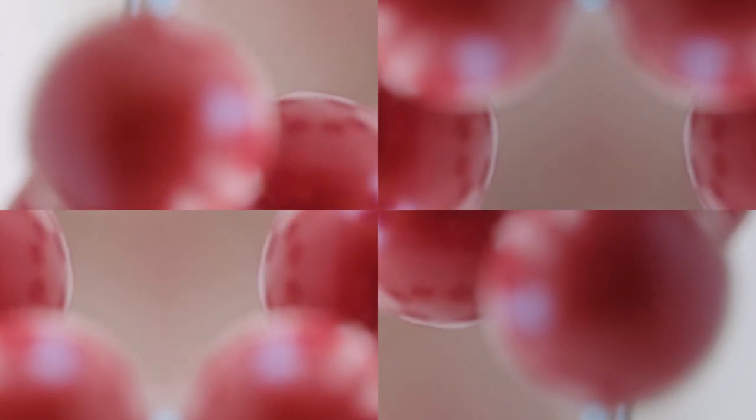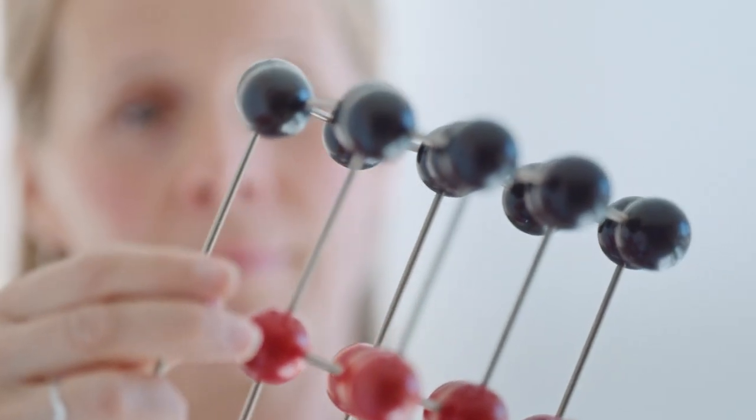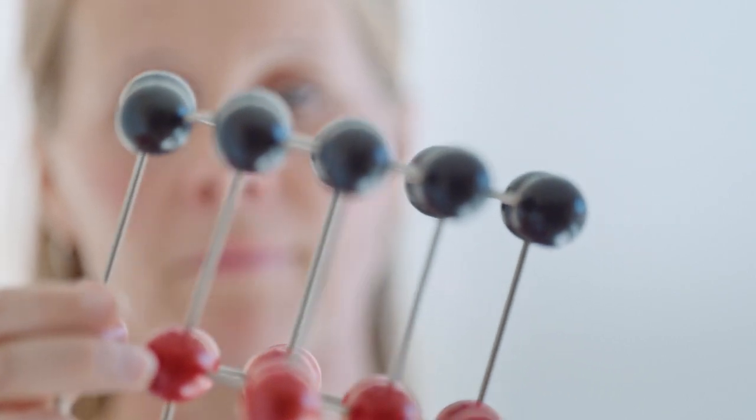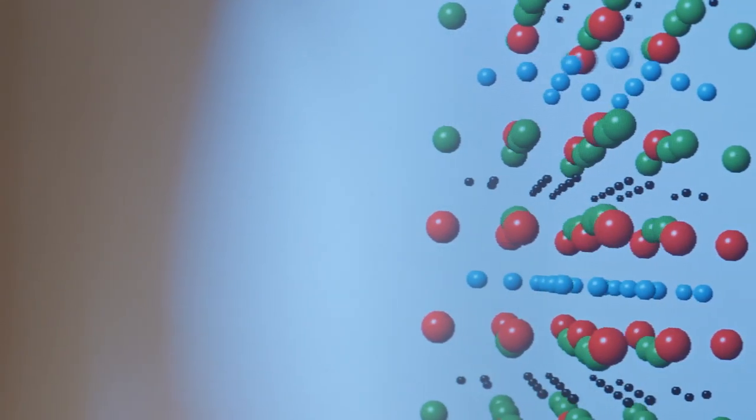Magnus' team started with a waste product when they created their battery. But when scientists develop new materials, they can also begin from a completely different end. Johanna Rosén builds with atoms. When we want to create a new material, we start from scratch. We combine atoms in different structures and this gives a huge number of different combinations.